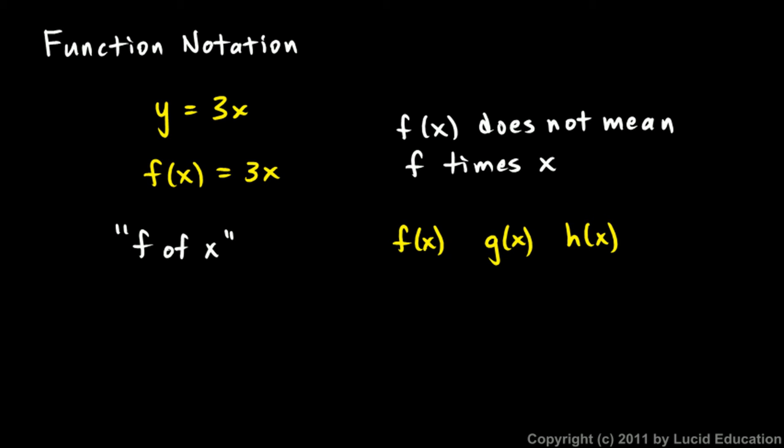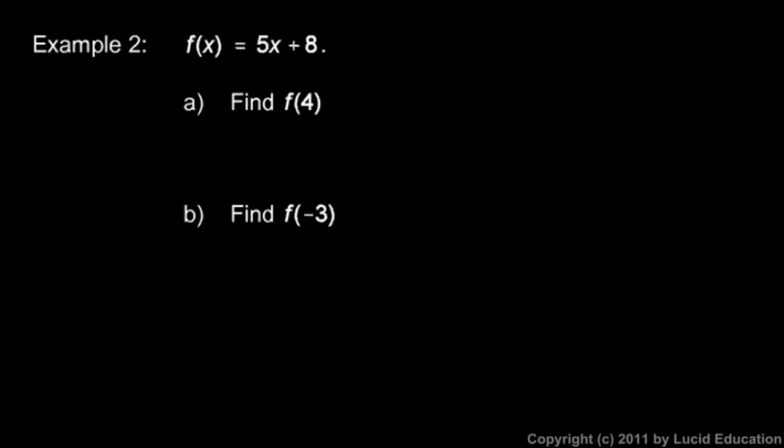Here's an example. We're told that f of x equals 5x plus 8, and we're told to find f of 4. That's how a mathematician would read that, f of 4. So you see how the notation works. See this little f of x here? In this case we have f of 4. This variable x has been replaced with 4. So this means take function f and put in 4 for the variable x.